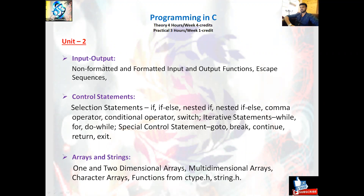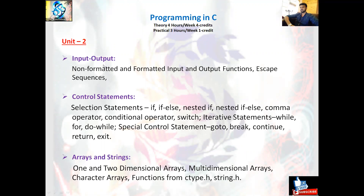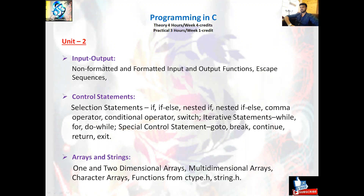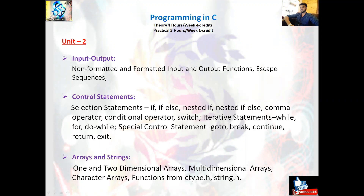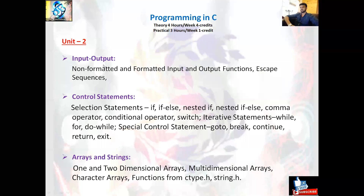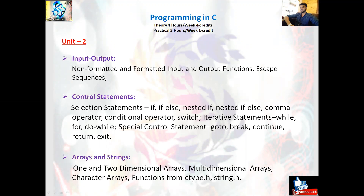Unit 2 also includes another topic: Control Statements. In C programming, when you want to execute some statements based on conditions, you use control statements. This topic includes conditional control statements: if, if-else, nested if, and nested if-else. We'll cover the complete syntax of each, how the if condition works, why we use if-else, how to use multiple if and if-else conditions, and some miscellaneous operators like comma and dot operators.